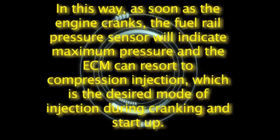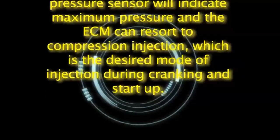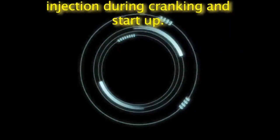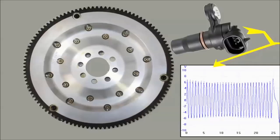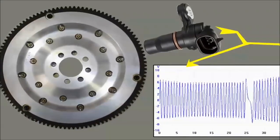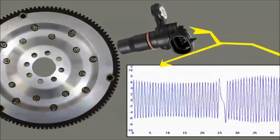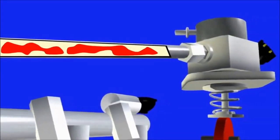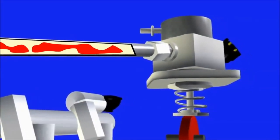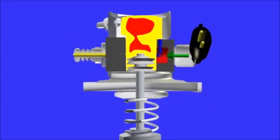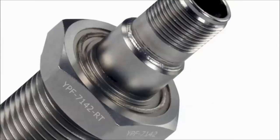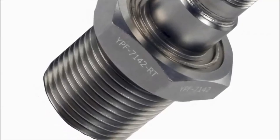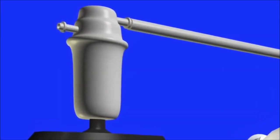As soon as the engine cranks, the fuel rail pressure sensor will indicate maximum pressure and the ECM can resort to compression injection, which is the desired mode during cranking and start-up. In case of a long or slow start condition, one of the first areas to look at is the low pressure pump keeping pressure during engine-off condition — no residual pressure loss, no air in the systems, and a rapid low pressure build-up upon start-up. GDI does not accept a mildly weak electric fuel pump as is the case with many port fuel injection systems.